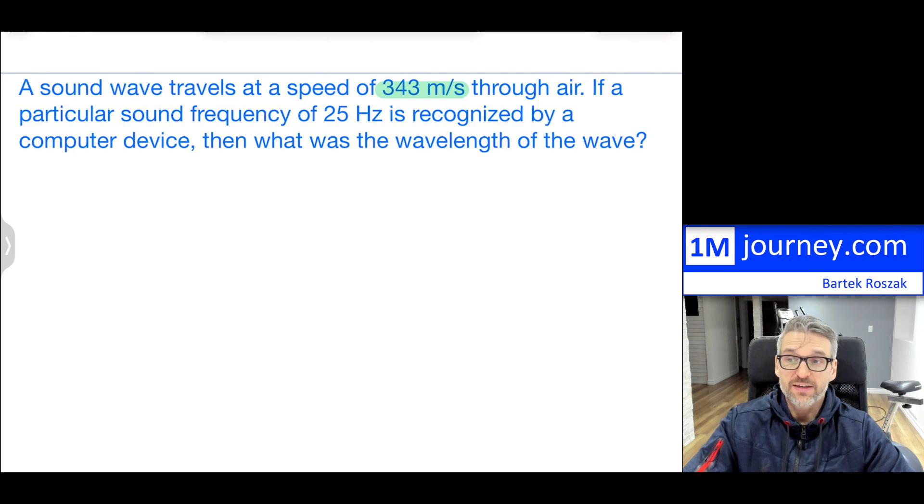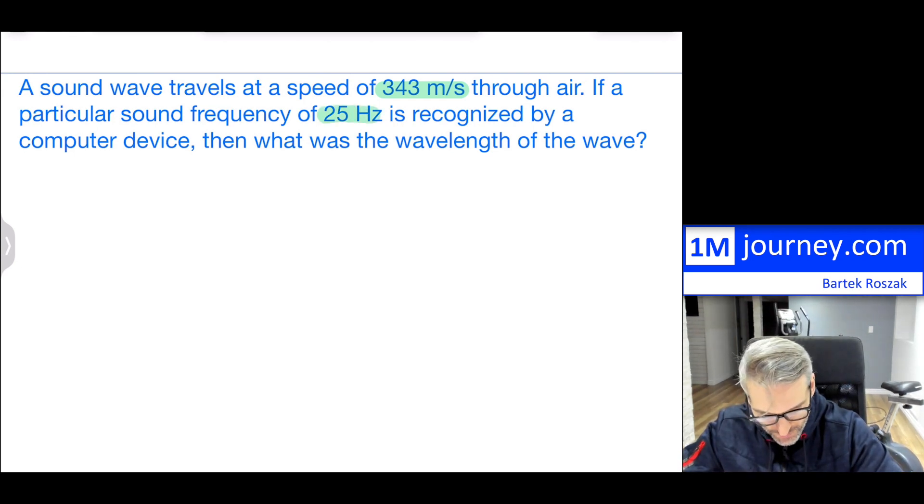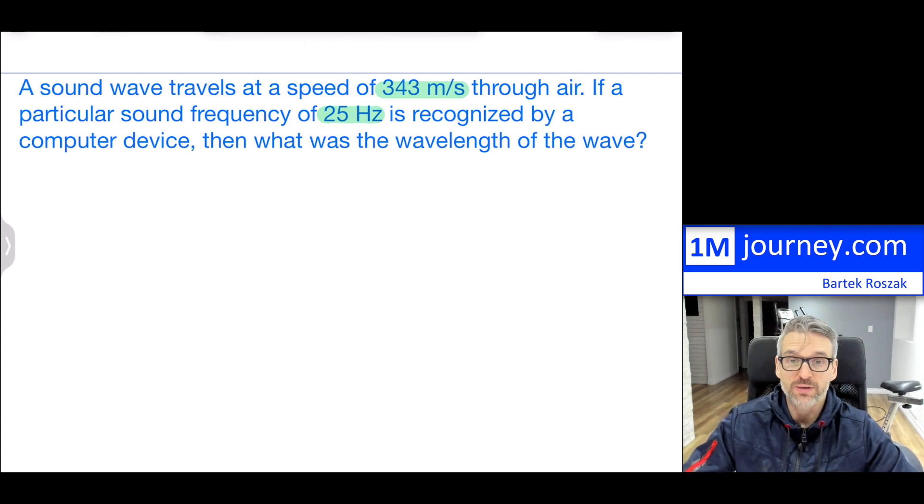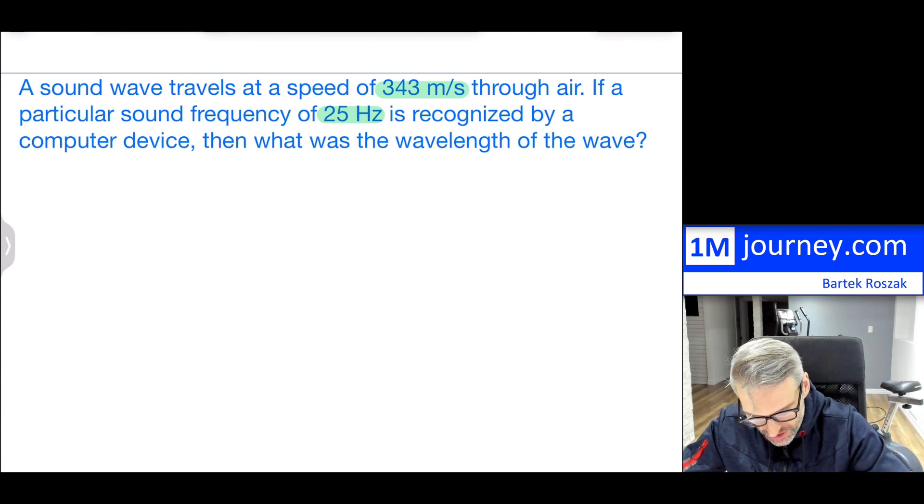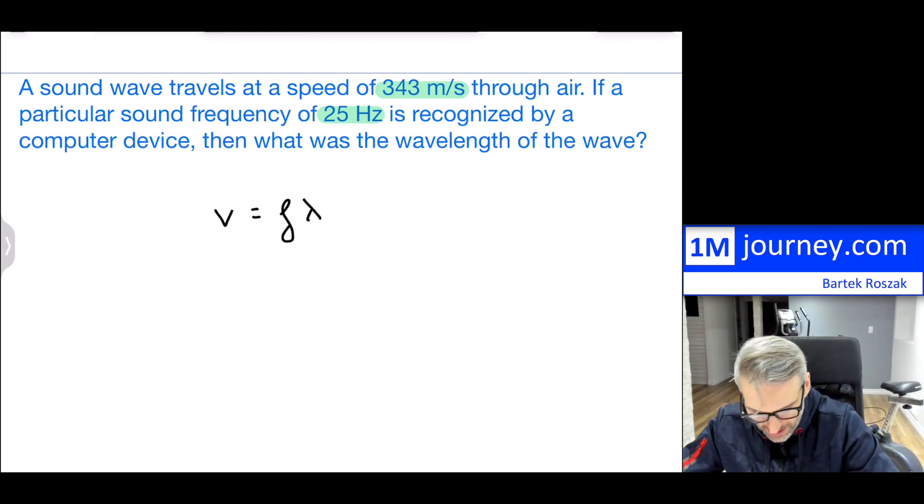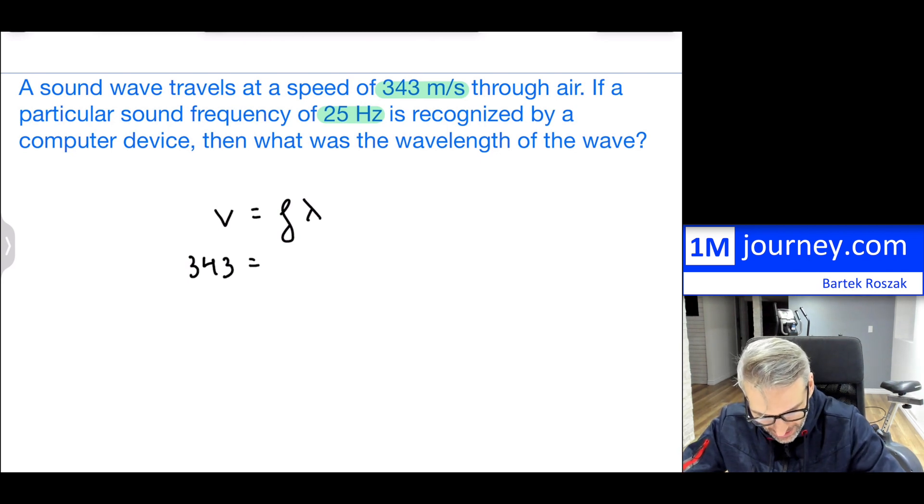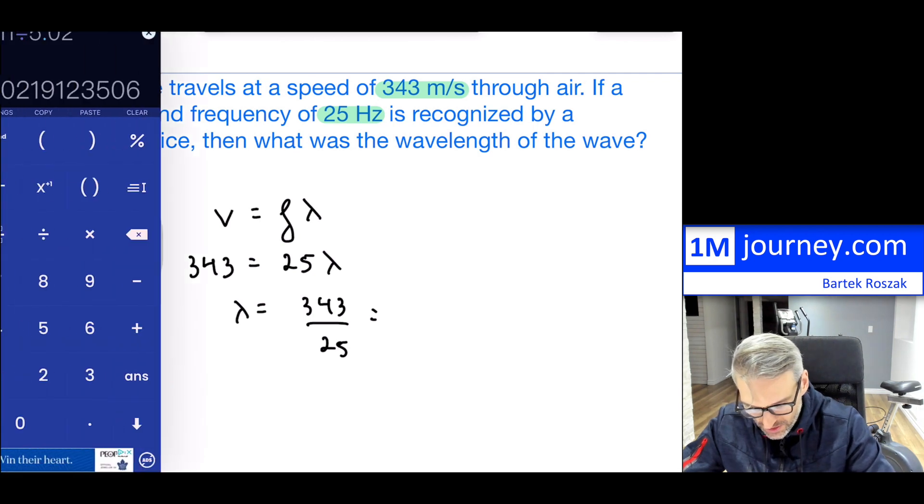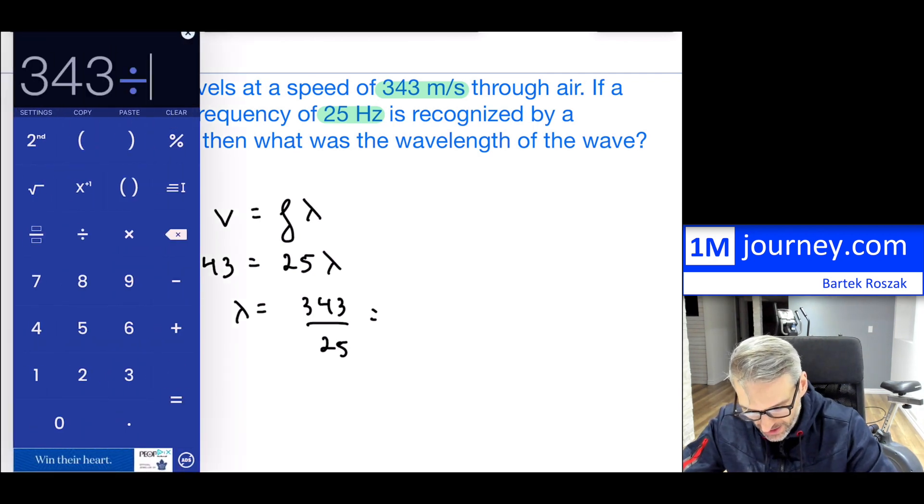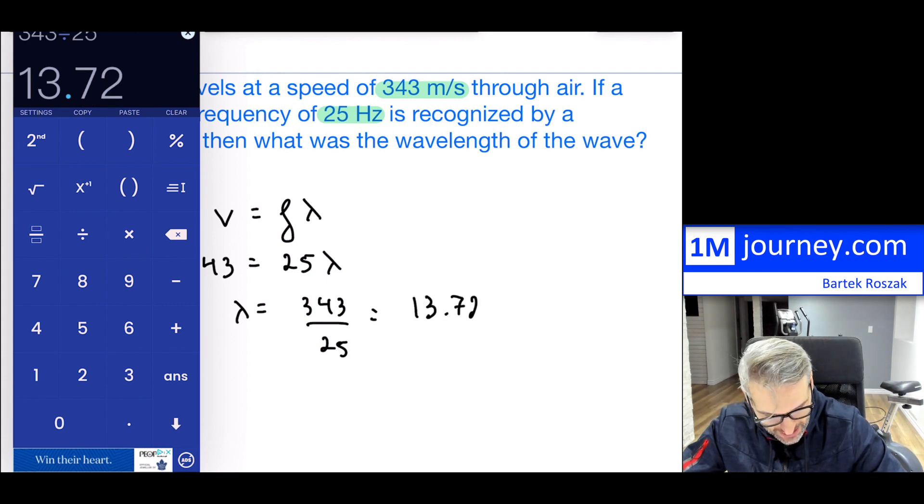If a particular sound frequency of 25 hertz is recognized by a computer device, then what was the wavelength of the wave? Calculations here are very simple because it's talking about frequencies. I can substitute the given pieces. Notice it's all in metric standard. So 343 divided by 25. And this would have been 13.72 meters. Two significant figures, this would have been approximately 14 meters in terms of a wavelength.